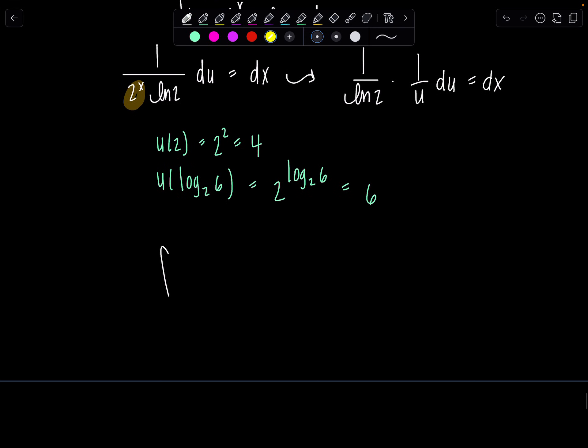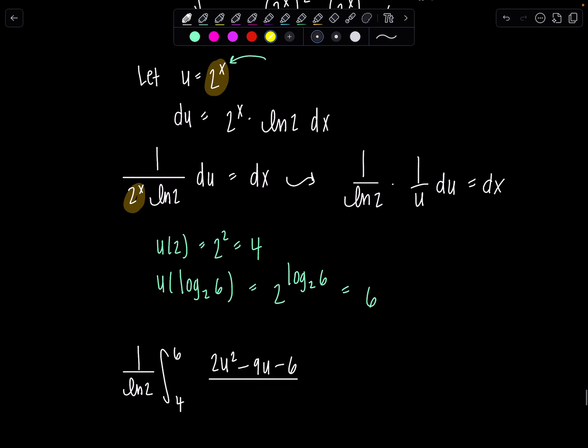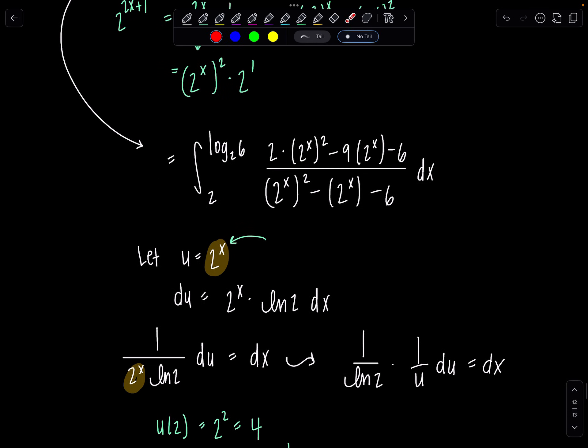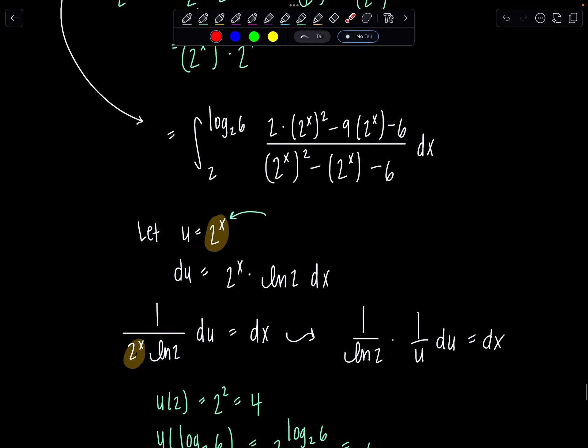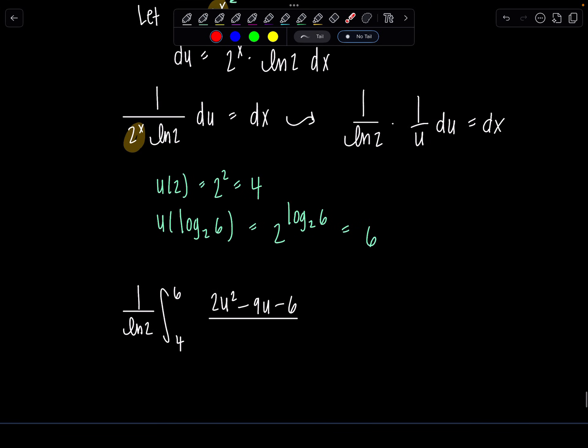So here's our new integral, all in terms of u. I'm going to put the ln(2) outside. 1/ln(2) integrating from 4 to 6. And we have 2u^2 - 9u - 6 over u^2 - u - 6, and then we have times 1/u du.